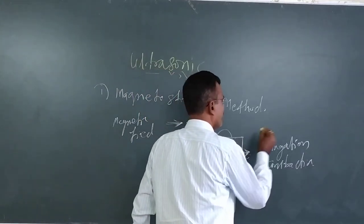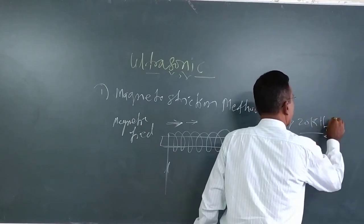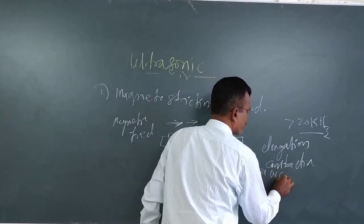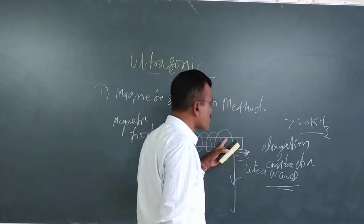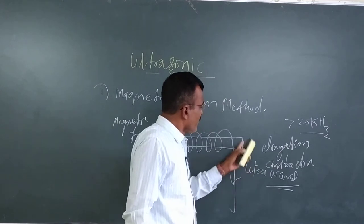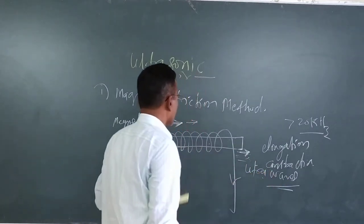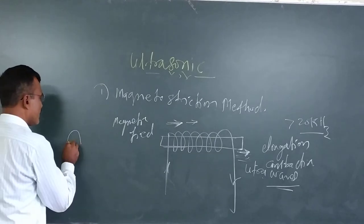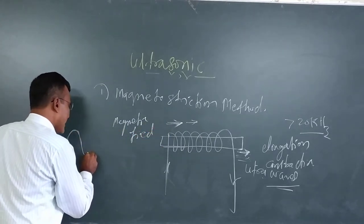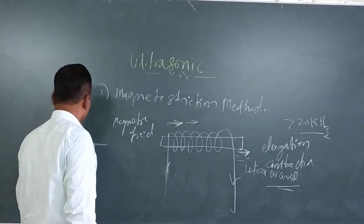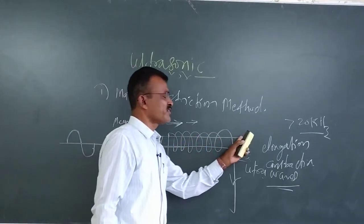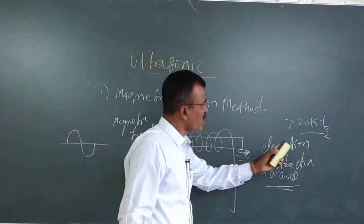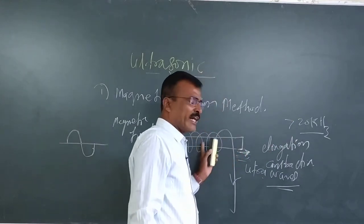If the frequency of vibration is greater than 20 kilohertz, there will be production of ultrasonic waves. When we apply a changing field, for every half cycle there is a change in length — positive half cycle and negative half cycle. Because of this, for one cycle of input there will be two times change in length, so the frequency of ultrasonic waves will be double the frequency of the input magnetic field.